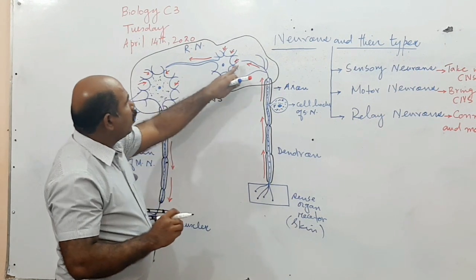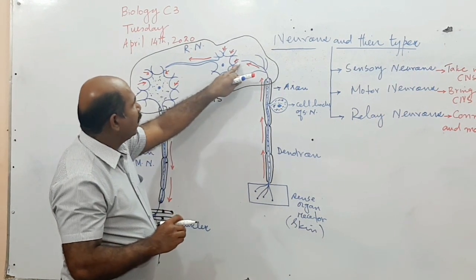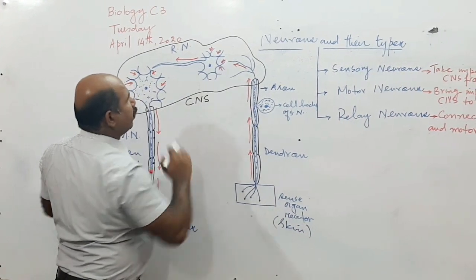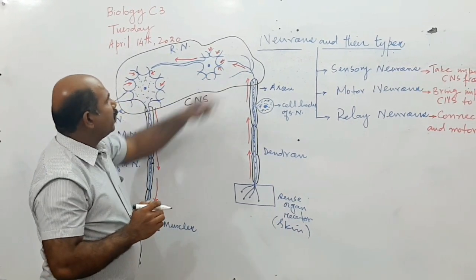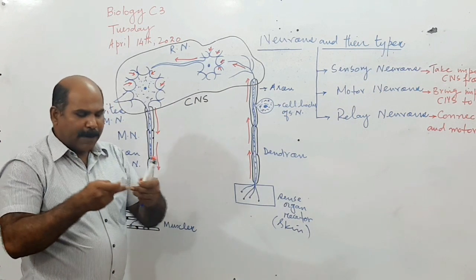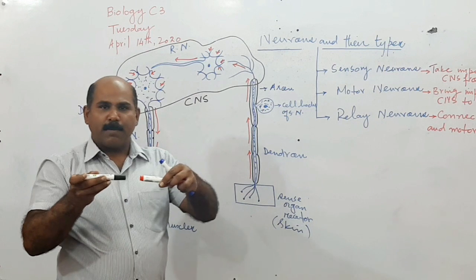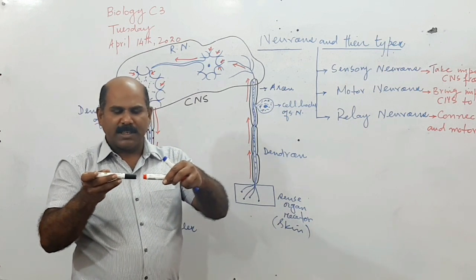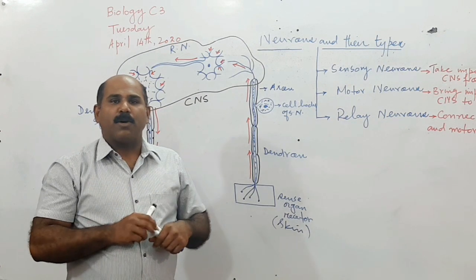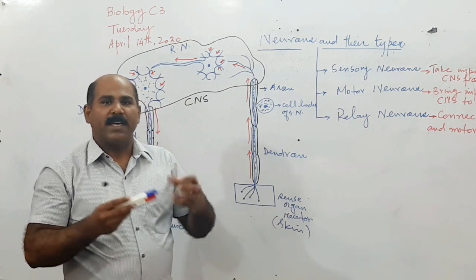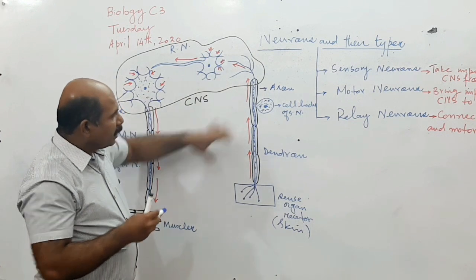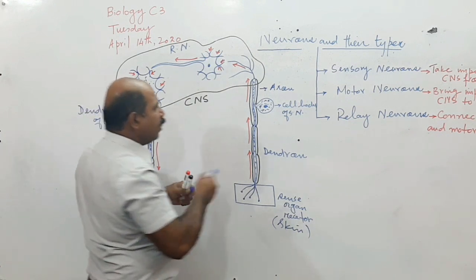One last important observation is that all the neurons are not connected directly. You can see there is a gap between the neurons — they are not connected to each other. This gap is called a synapse. There is significance to this gap and we will discuss the synapse later.